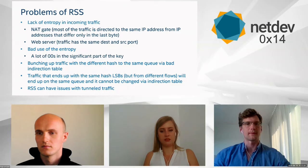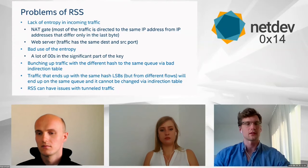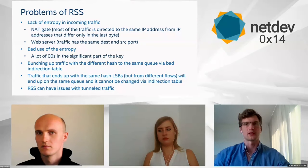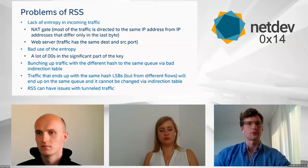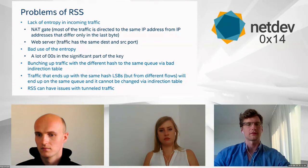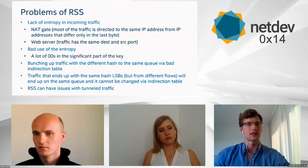If there are many zeros in the significant part of the key, by the nature of XOR, zeros effectively do nothing. The more zeros, the less variation in the final hash value. Due to the nature of the indirection table, more than one indirection index can end up with the same queue ID for different flows, causing traffic to bunch together with many flows directed to the same queue.